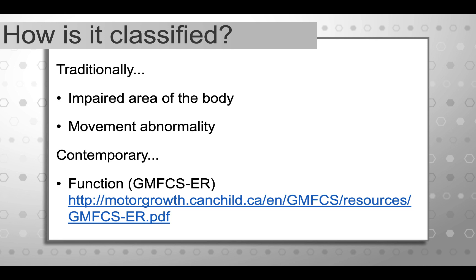So how do we classify cerebral palsy? Traditionally we classify cerebral palsy by impaired area of the body or the movement abnormality. Contemporary classification of cerebral palsy is done using the GMFCS — there's a version now called the GMFCS-ER, which means Extended and Revised. There's a link to that resource; it's available for free online at the CanChild website, and we're going to talk about it more in a few slides.